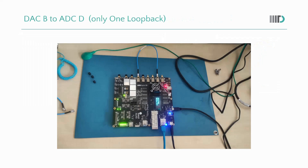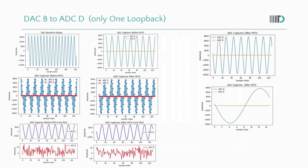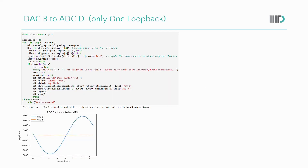In this configuration, we have only a single loopback from DACB to ADCD. Since there is only one signal, MTS is not required here. The verification confirms MTS will fail in this case because it cannot align a sine wave signal with noise — there is no second signal to synchronize with.